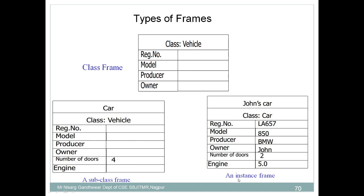The third type of frame is instance frame. We can say John's car — John is one instance of the subclass car. We have the derived class car, and for that car we have one instance called John. John is an instance of the subclass car, which is derived from the base class vehicle. John's car also possesses attributes: registration number, model, producer, owner, number of doors, and engine. These are the various types of frames you can use to represent information.